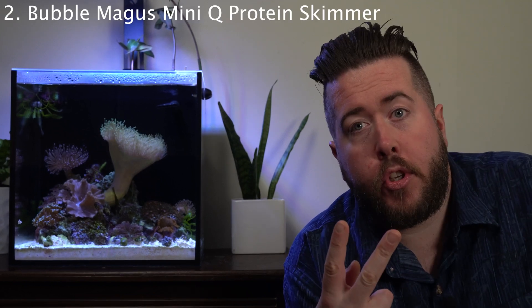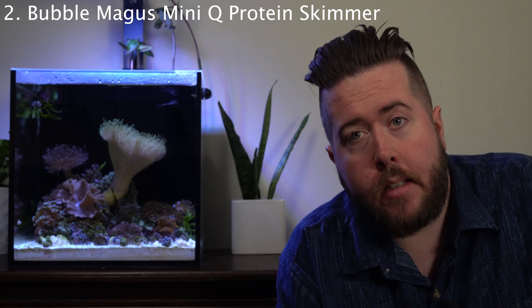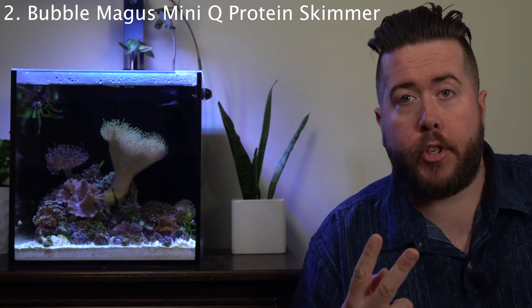Number two: the Bubble Magus Mini Q protein skimmer. This thing is tiny—tiny, tiny. It'll fit in the back of any all-in-one aquarium